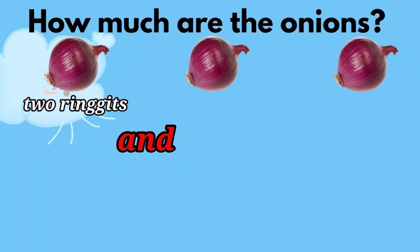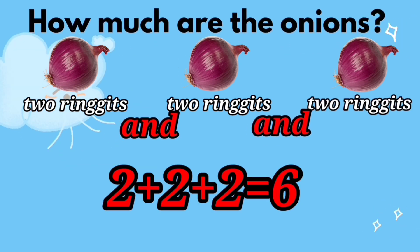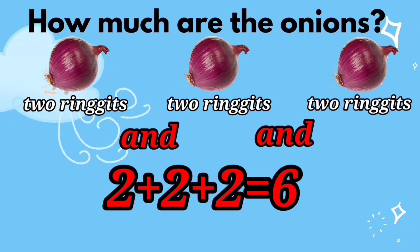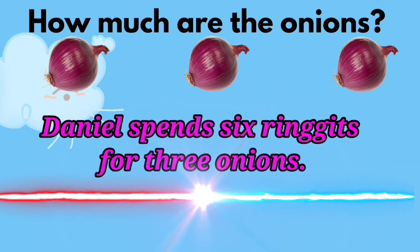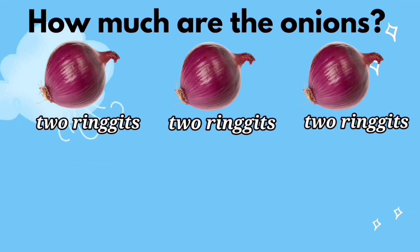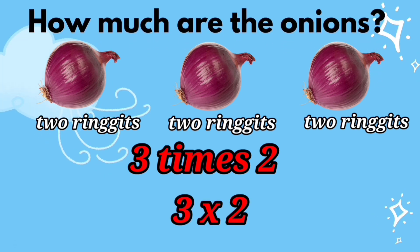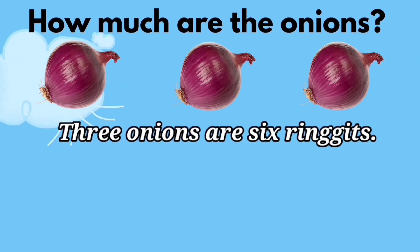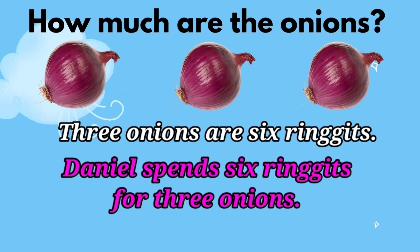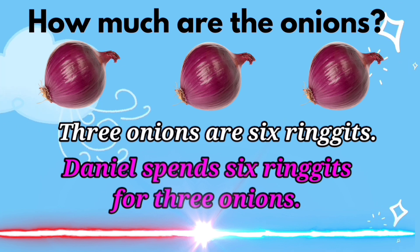How much are the onions? 2 ringgits and 2 ringgits and 2 ringgits — 2 and 2 and 2 equals 6. Daniel spends 6 ringgits for 3 onions. By multiplication: 3 times 2 is 6. Three onions are 6 ringgits. Daniel spends 6 ringgits for 3 onions.